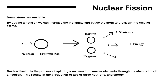This results in the production of two or three neutrons, some extra elements, and releases energy. You can see in this diagram that a neutron is being added to uranium-235. This will create, for a moment, uranium-236. But uranium-236 is so unstable that it almost instantly breaks up into barium and krypton.